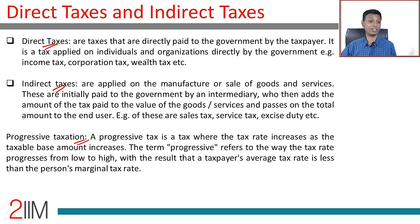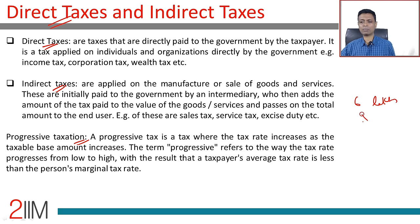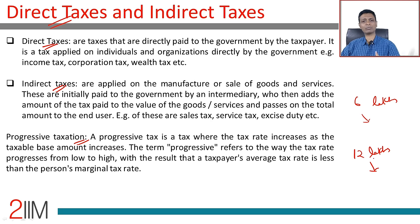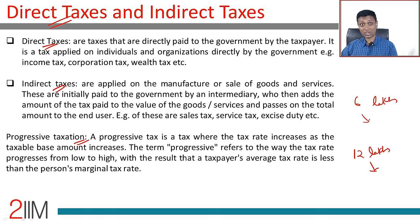Progressive taxation is implementable with direct taxes. Someone earning 6 lakhs can pay some percentage of income as tax, while someone earning 12 lakhs pays a higher percentage overall. That is why we have tax slabs — for the first bracket there are no taxes, then a small rate, then higher rates. As you earn more, a larger and larger share of your income is paid as taxes. The rich pay more. That idea is progressive.